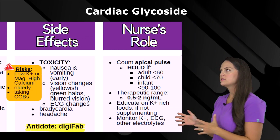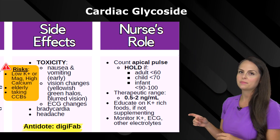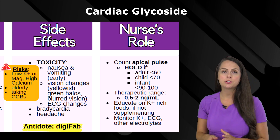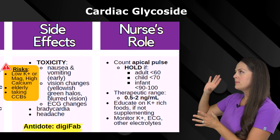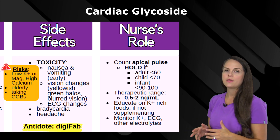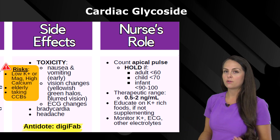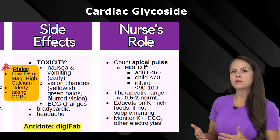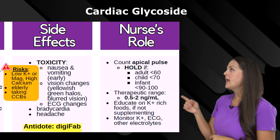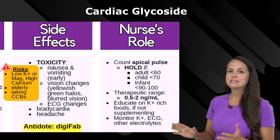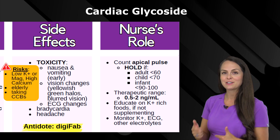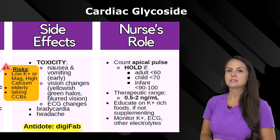Now for side effects associated with digoxin, I really want to concentrate on toxicity because digoxin has a very narrow therapeutic range of 0.5 to 2 nanograms per milliliter. You want to make sure you are aware of these signs and symptoms of toxicity. Early on the patient can have nausea and vomiting. Then they can have vision changes where they start to see yellowish-green halos, and as it progresses the ECG will start to show dysrhythmias. So if your patient's on dig and that's happening, definitely want to get help.